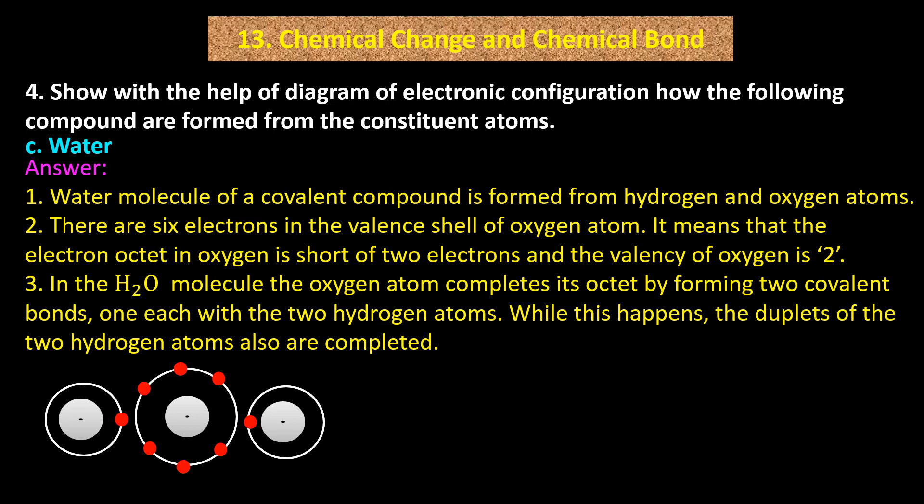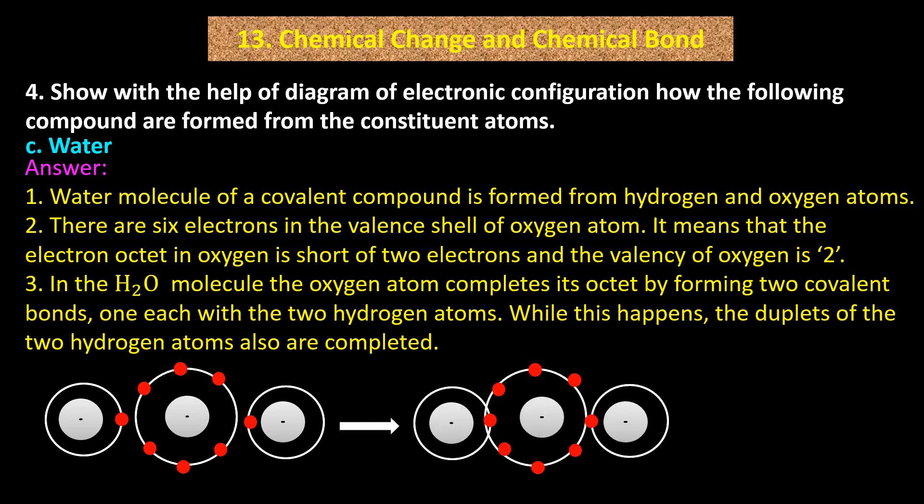While the oxygen atom completes its octet, the duplets of the two hydrogen atoms are also completed. Each hydrogen atom has one electron in its first shell; each shares its one electron with oxygen, which has six electrons in its outermost shell, forming two covalent bonds and producing a water molecule H2O.